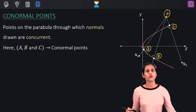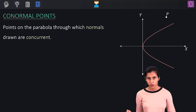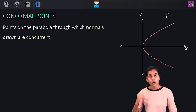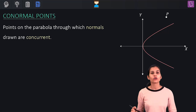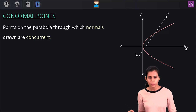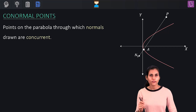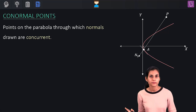There's another way to understand this concept. Let P be any point, and from it, draw normals to this parabola. Let N1 be one such normal to the parabola at point A — meaning A is the point of contact for this normal. So at A, when I draw a tangent, it will be perpendicular to N1.